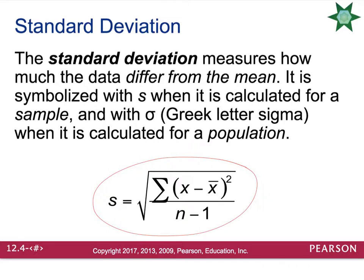In the formula, you take each data point minus the mean, then you square that value. Then you add up the results for every single data point. Then you divide by the sample size minus 1, and then you take the square root. It's quite the process, and it's usually easiest done in a table.